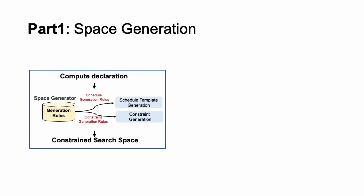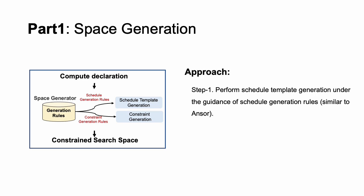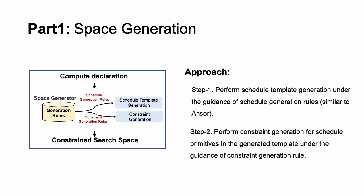For the first part, the input is the compute declaration and the output is the generated CSP. The generation process consists of the following steps. Step one, we perform schedule template generation under the guidance of schedule generation rules. Step two, we perform constraint generation for the schedule primitives in the generated schedule template under the guidance of constraint generation rules. Finally, we construct the CSP as an ensemble of the generated constraints.